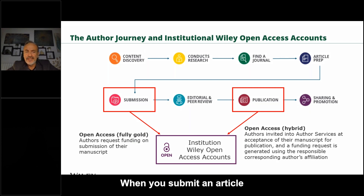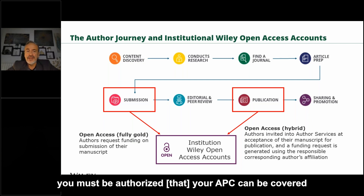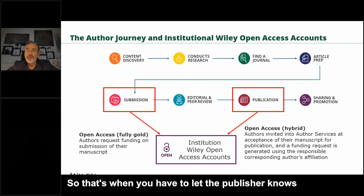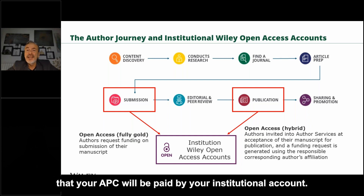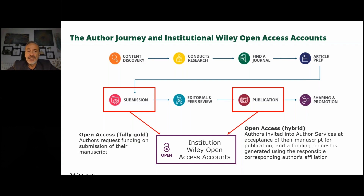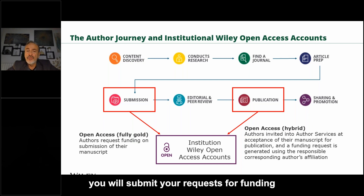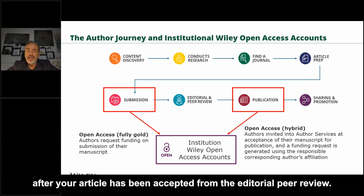When you submit an article to a fully gold open access journal or Hindawi, you must have your APC authorized to be covered at the submission stage — that's when you have to let the publisher know that your APC will be paid by your institutional account. For hybrid open access publication, you will submit your request for funding after your article has been accepted from editorial peer review.